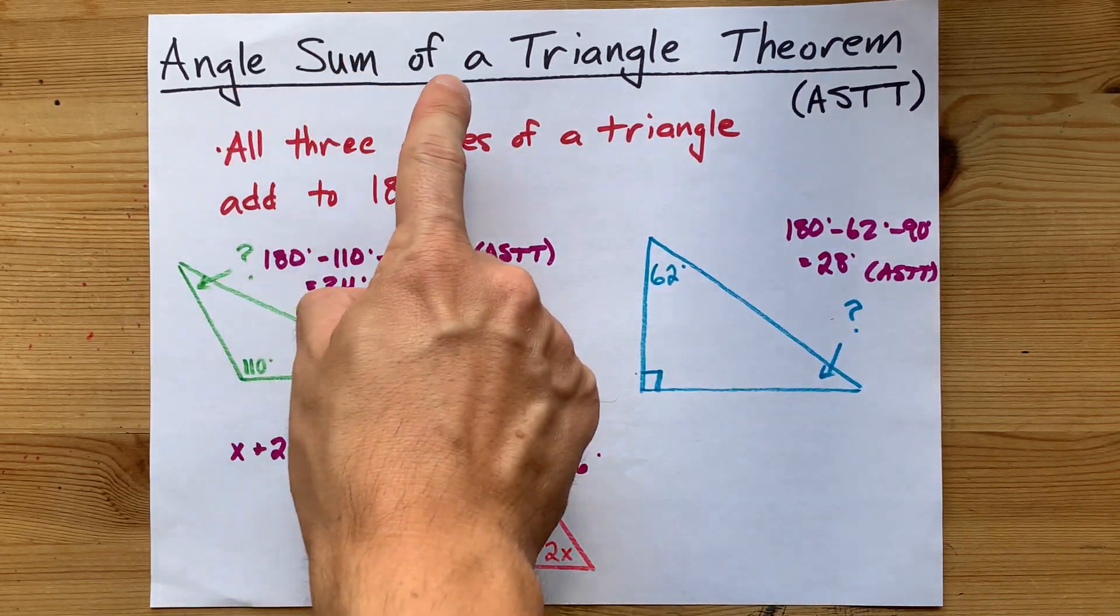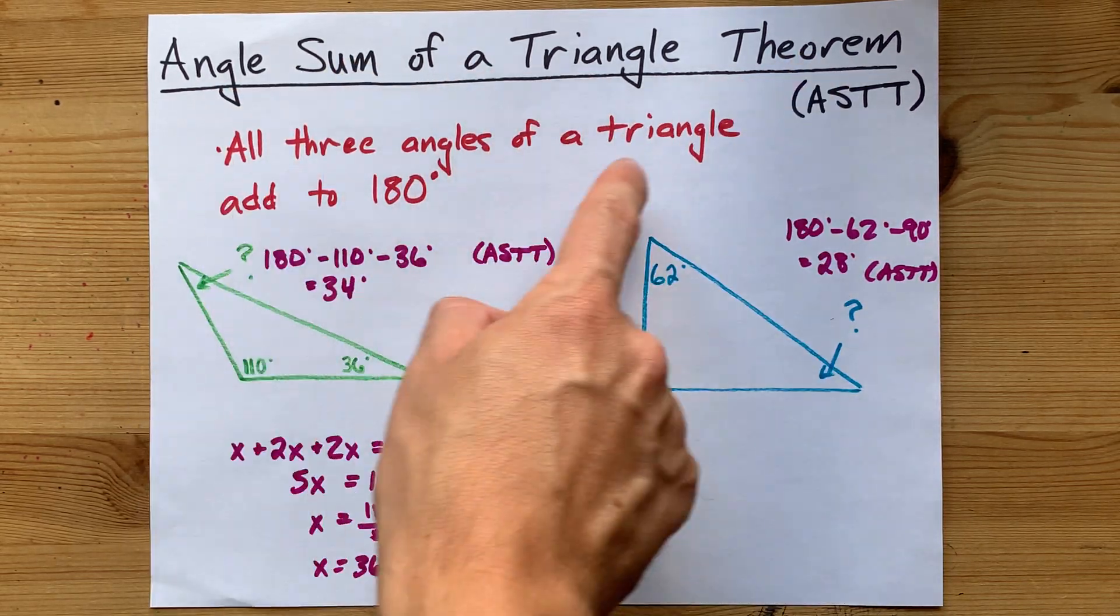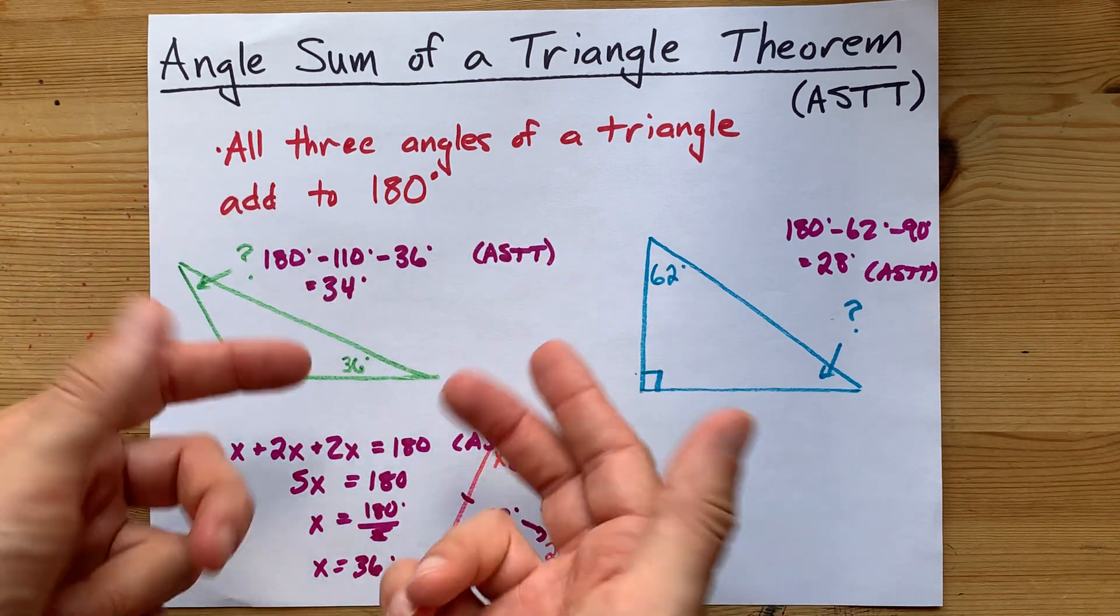ASTT - angle sum of a triangle theorem. All three angles add to 180. Use it or lose it. Best of luck.